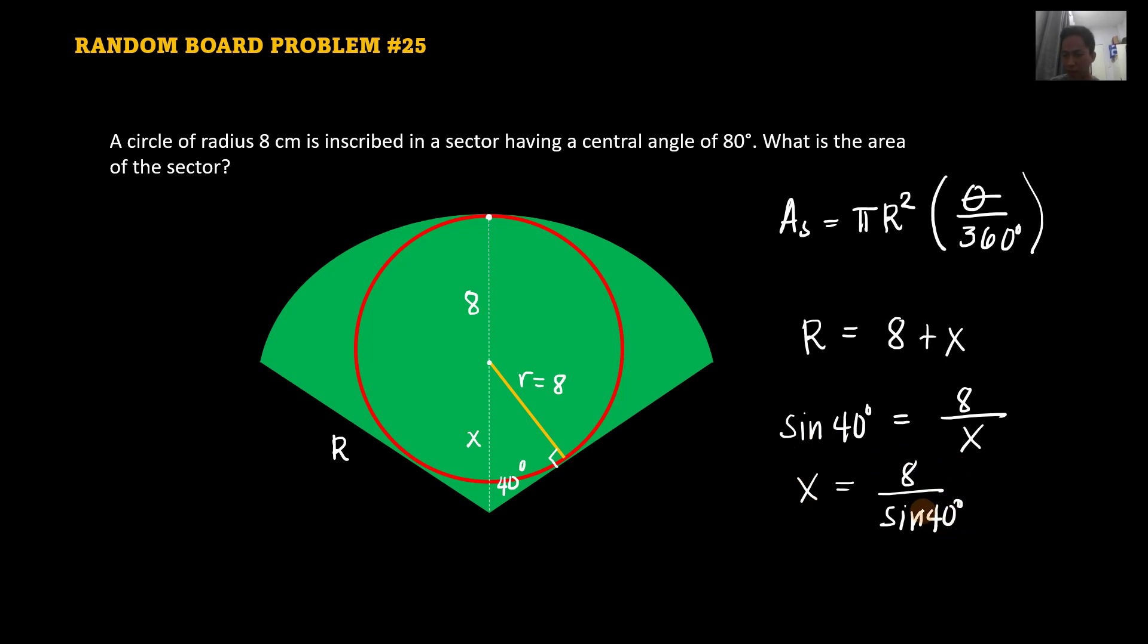You can compute that value. But it's actually more accurate if you just input your r here and go directly to the formula. So we have the area of the sector. So that is pi r squared. Our r is 8 plus x. So 8 plus x which is 8 over sine 40 degrees.